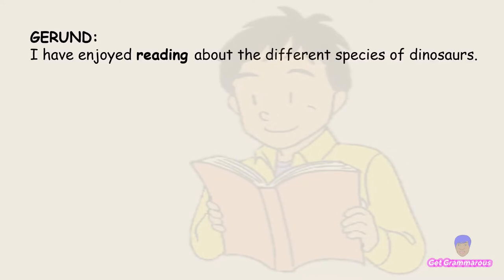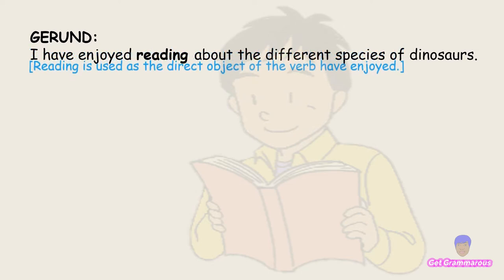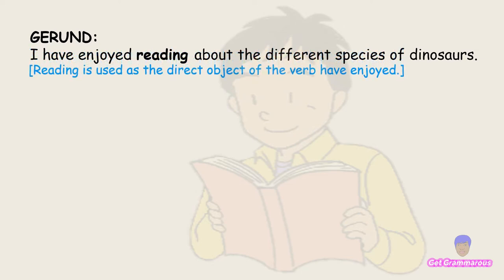Gerund example: 'I have enjoyed reading about the different species of dinosaurs.' Reading is used as the direct object of the verb have enjoyed.